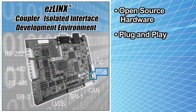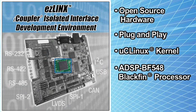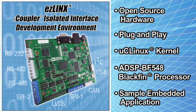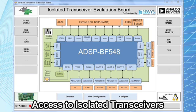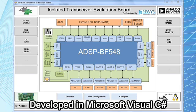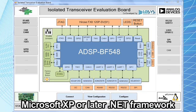The open source hardware platform allows for plug and play connection through the isolated USB port to the PC. EasyLinks runs open source UC Linux as the kernel on the Blackfin BF548 processor, and this allows for easy system migration. The PC embedded sample application utilizes an easy to use graphical user interface for access to the isolated transceivers on EasyLinks. The PC application was developed using Microsoft Visual C# and can run on Windows XP or later. An expansion port is also included for additional functionality.